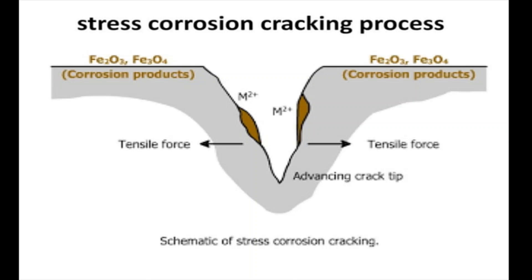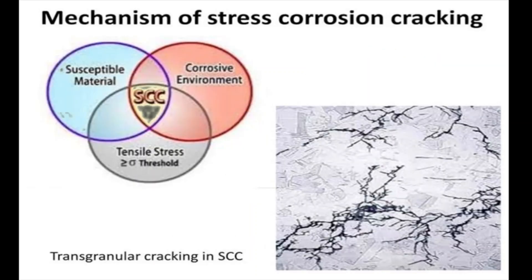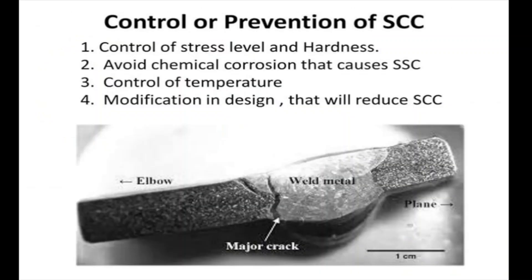The advancing crack tip will produce more and more corrosion product. In detail, the main reasons for the mechanism of stress corrosion are: susceptible material, corrosive environment, and tensile stresses. It is a very common but undesirable phenomenon. To prevent stress corrosion cracking or SCC, we need to control the stress level and hardness, avoid chemical corrosion that causes SCC, control the temperature, and make modifications in design that will reduce SCC.